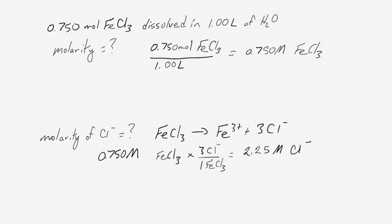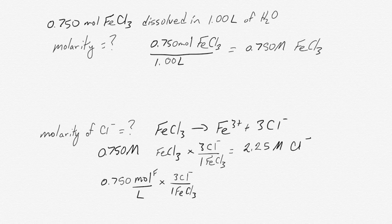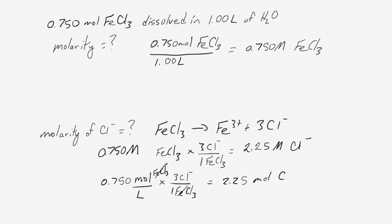So we know that we end up with 2.25 molar Cl-. And the reason we can do this is because the units of molarity are moles per liter. And as long as the volume doesn't change, we can use the mole ratio with the moles part of that unit. And the moles of FeCl3 are going to cancel and we'll be left with moles per liter of chloride ion.